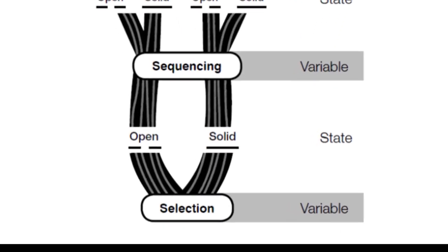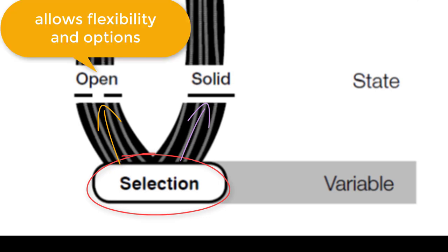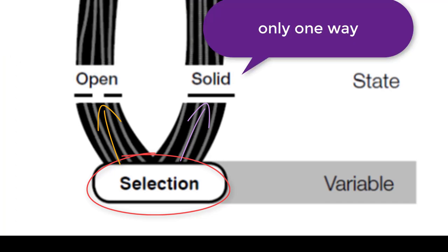Let's start off at the bottom and read it from bottom to top. We can see that we have Selection as the variable, and the teacher can have a choice between an open state and a solid state. An open state would be a situation where she allows lots of flexibility and openness in terms of what the selection is. A solid state would be a situation where what is to be done is definitely chosen, and that's what is going to be done.